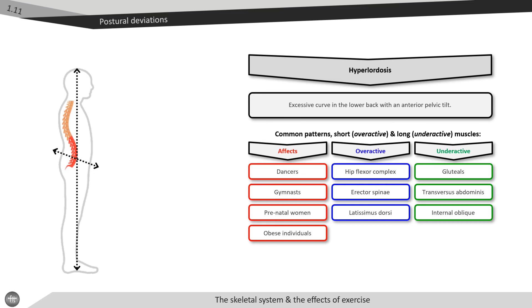Joint mechanics, as shown in the image, include increased hip extension. To improve hyperlordosis, we need to strengthen the abdominal core musculature and lengthen the hamstrings and erector spinae groups.